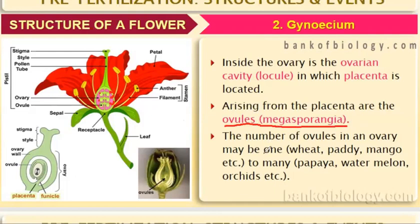The number of ovules in an ovary may be one or many. After fertilization, the ovary converts into fruit and the ovules convert into seeds. Like mango — everyone has seen that a mango has only one seed, which means it had only one ovule in the flower.